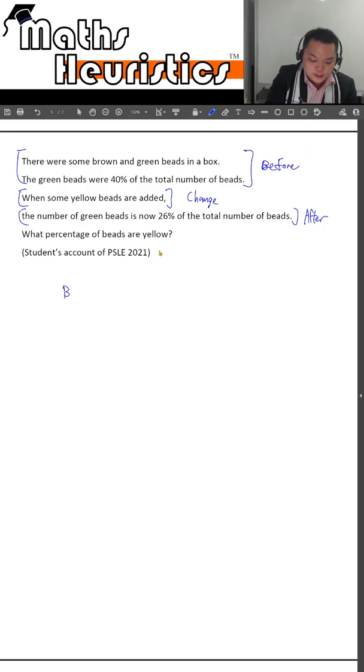Let's label out what we have. We have brown beads, we have green beads, we have yellow beads. There is a before, there is a change, and there is an after.